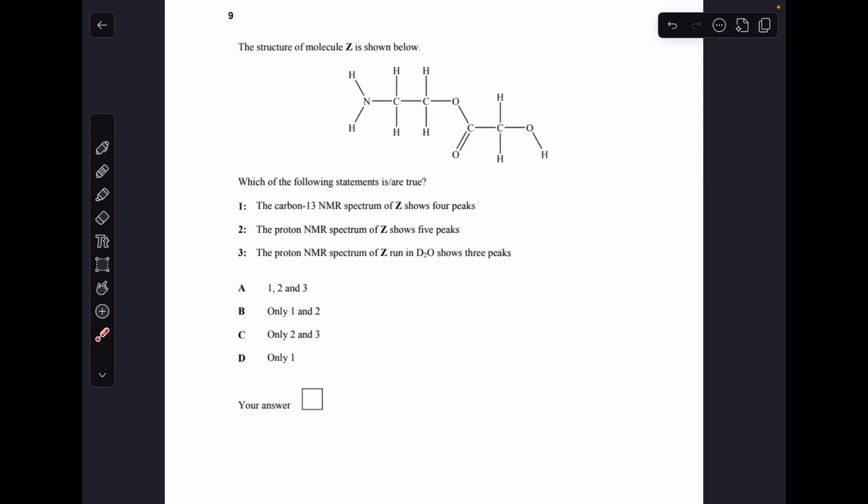Moving on to number nine, which of the following statements is true? So carbon-13 NMR spectrum of Z shows four peaks, is that true? Yes it is, we've got no line of symmetry, so all four of the carbons are in different environments. Statement two, proton NMR spectrum of Z shows five peaks, well they're all going to be different, because there's no symmetry, so one, two, three, four, five, so that one's true. And finally three, the proton NMR spectrum of Z run in D2O shows three peaks, so these protons will be removed in D2O, and this one as well, so we're left with one, two, three, so that one's true as well. So all three were true, option A.